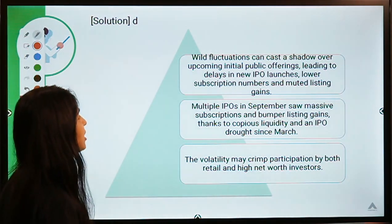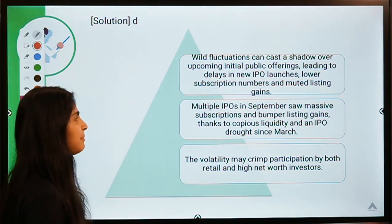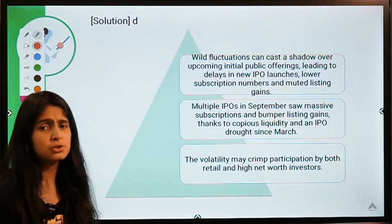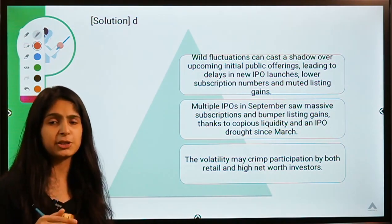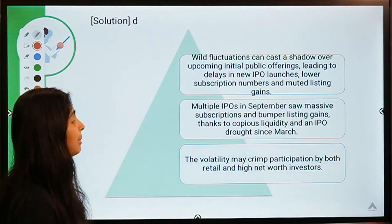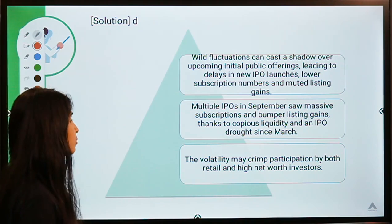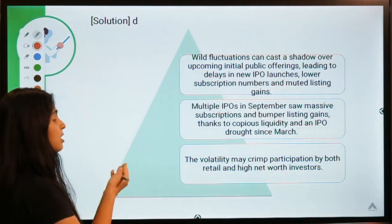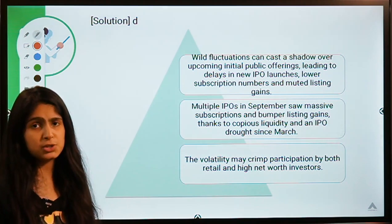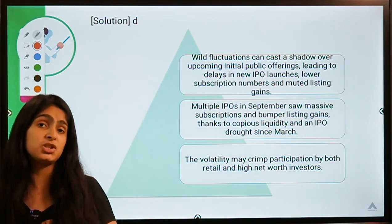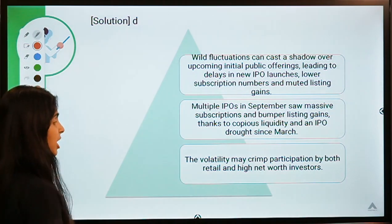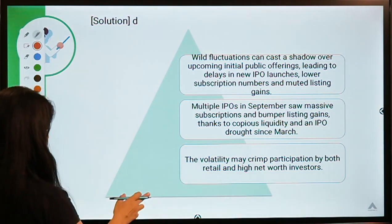Recently in India we have seen many IPOs coming up with good responses, but experts are citing that volatility is increasing in the market. If volatility continues, IPOs may slow down. Fluctuations can cast a shadow over upcoming IPOs, leading to delays in IPO launches, lower subscription numbers, and muted listing gains — including the 'listing pop' discussed in a previous video. There was also an IPO drought since March, which led to pent-up demand once companies started coming up, causing bumper listing gains. Volatility may crimp participation by both retail and high-net-worth investors.